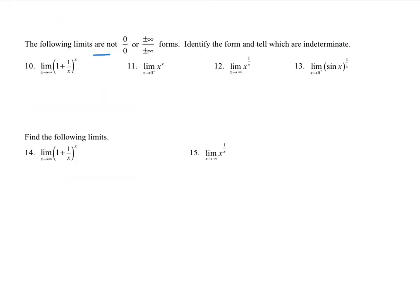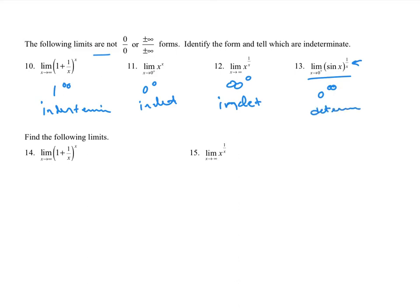Now let's look at forms that are not 0 over 0 or infinity over infinity, and identify which are indeterminate. The form 1 to infinity is indeterminate. The form 0 to the 0 is indeterminate. The form infinity to the 0 is also indeterminate. However, 0 to infinity is determinate — because 1 over x goes to infinity as x goes to 0, but 0 to a positive power is just 0, so this one does have an answer.